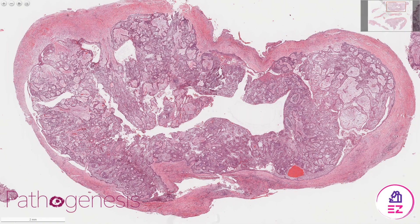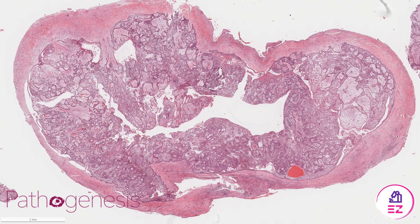Hello and welcome to Path Made Easy. Today's example is a unicystic ameloblastoma. This particular one was found at the angle of the mandible, where it was a well-defined unilocular radiolucency associated with an impacted wisdom tooth — quite a classic presentation. There was nothing concerning on the imaging.